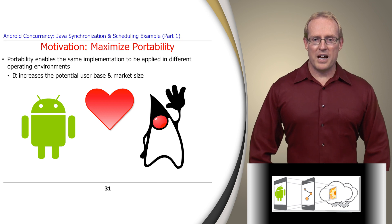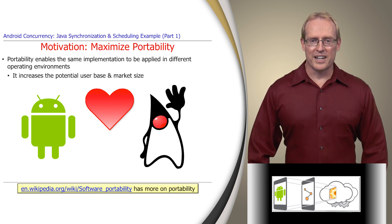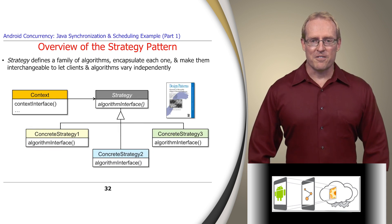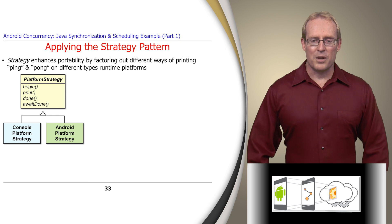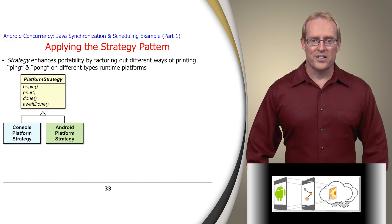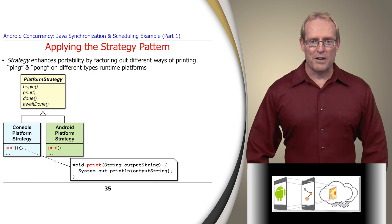Another software quality attribute we want to maximize is portability, which enables the same implementation to be applied in different operating environments, thereby increasing the potential user base and market size. To achieve this attribute, we use the strategy pattern, which defines a family of algorithms, encapsulates each one, and makes them interchangeable to let clients and algorithms vary independently. The ping pong program applies this pattern to define a platform strategy class hierarchy that factors out different ways of printing ping and pong and coordinating the completion of printing operations on different runtime platforms, such as a Java console application versus an Android application. For example, the platform strategy begin method initializes the countdown latch to account for two threads, and works the same on both console and Android applications. The console platform strategy print method calls the Java System.println method, which writes the output string to the console window.